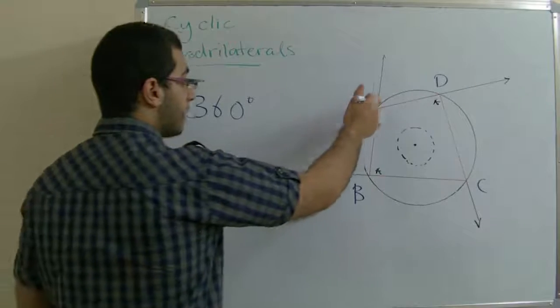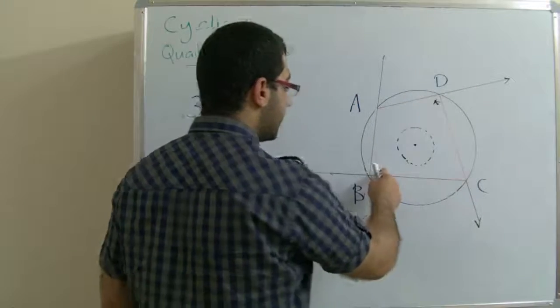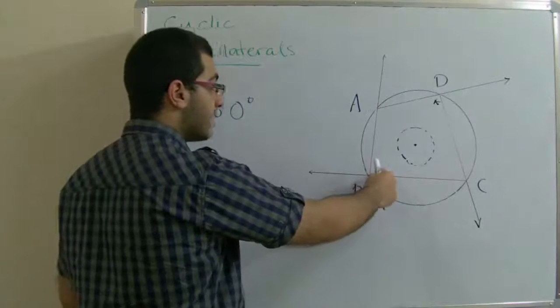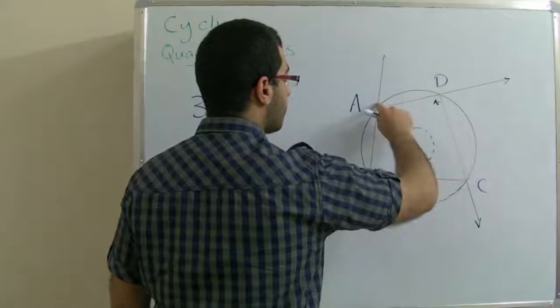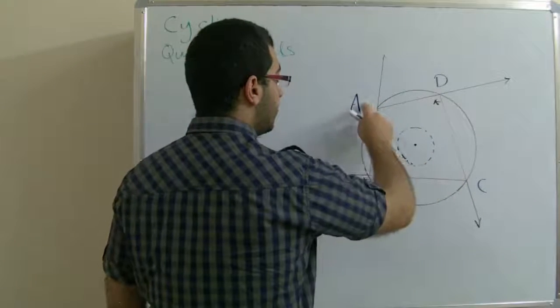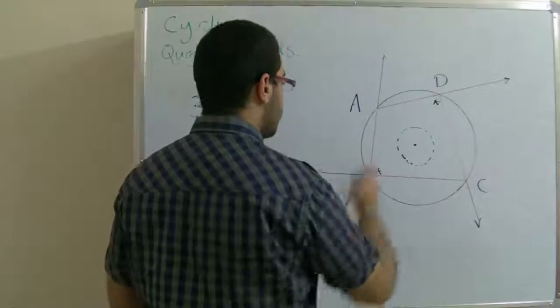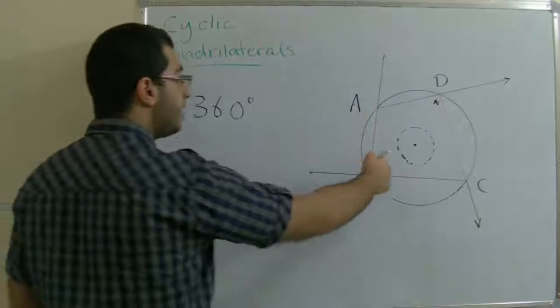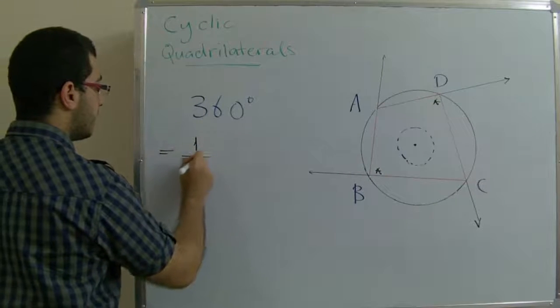As we may have an angle inscribed to a certain arc, its measure is half this arc. We have angle ABC half arc minor AC, and angle ADC half arc major AC.